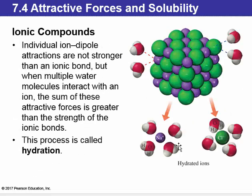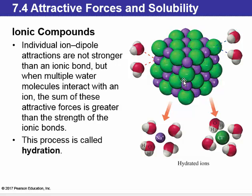If we look at ionic compounds, they are made of positive and negative charges — that is very polar. Not all ionic compounds will dissolve in water, but if an ionic compound does dissolve in water, then the positive ion will be surrounded by the partial negative oxygen, and the negative ion will be surrounded by the partial positive hydrogen of water. So water, as a polar substance, is able to dissolve an ionic substance.